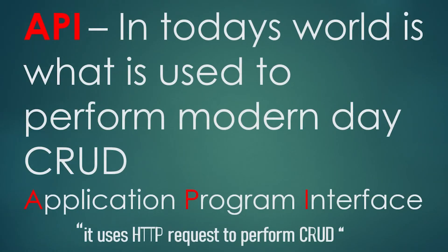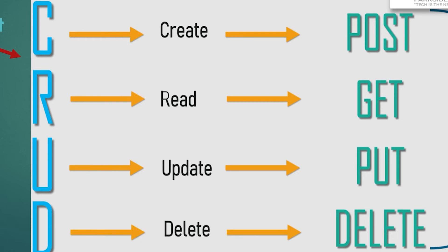If you're doing any modern application, you're probably using an API — that's what everybody's using today. But if you look closely, it is still CRUD, but the operations are performed with HTTP requests. HTTP POST is a create, HTTP GET is a read, HTTP PUT is an update, and DELETE is a delete. Even if you're doing legacy systems or an IBM mainframe with a DB2 database, you were still doing CRUD — creating, reading, updating, or deleting records from a database.